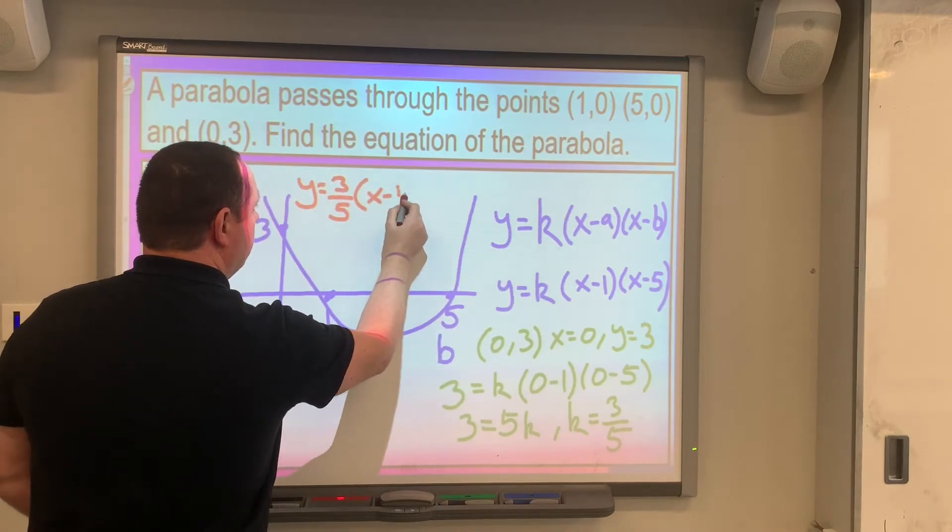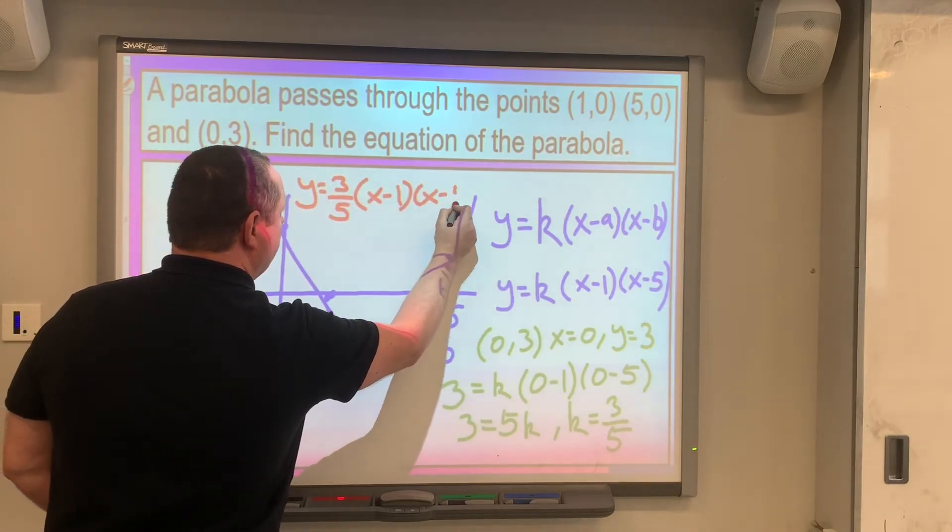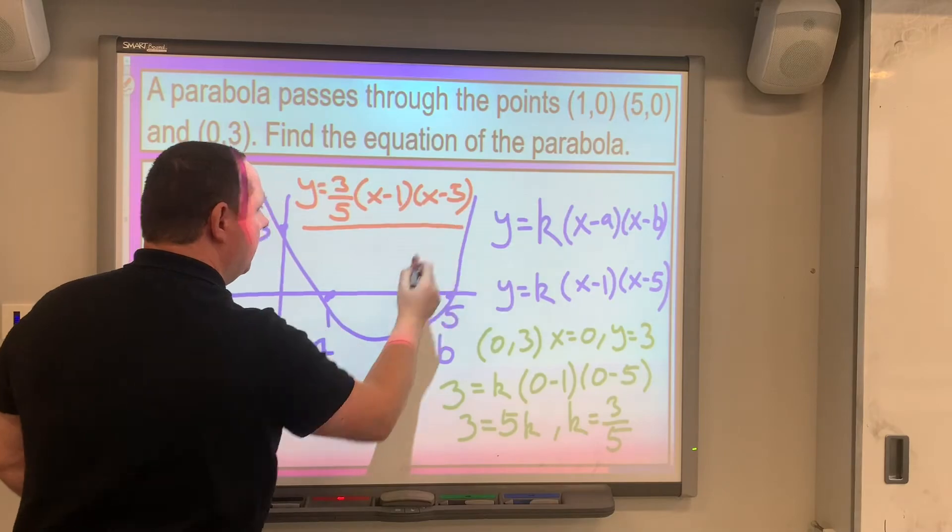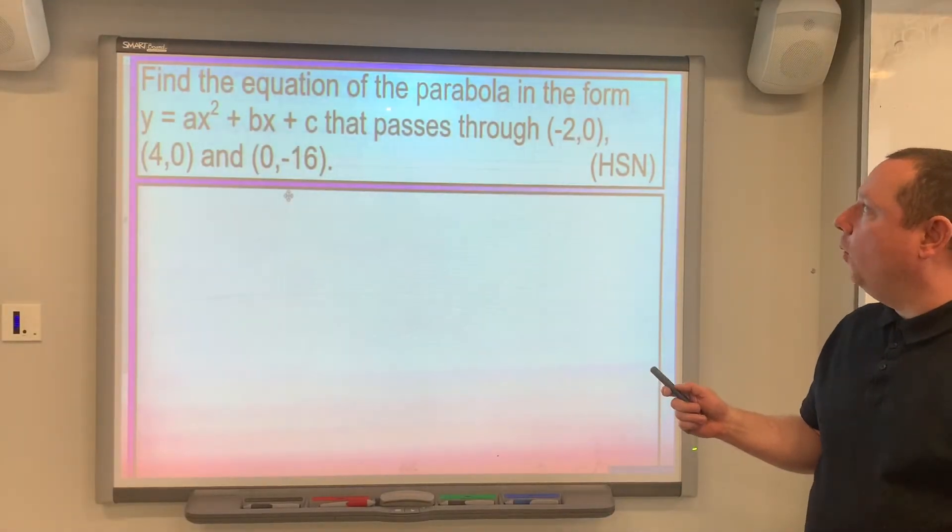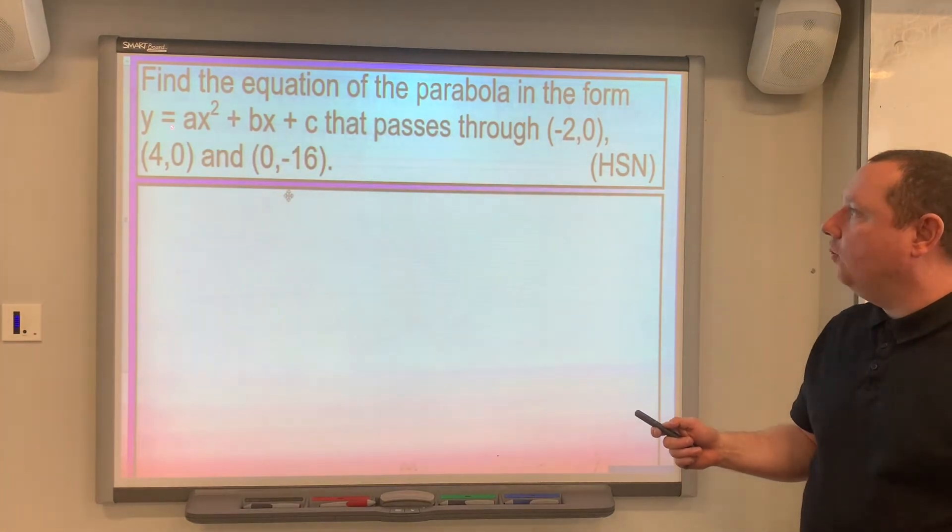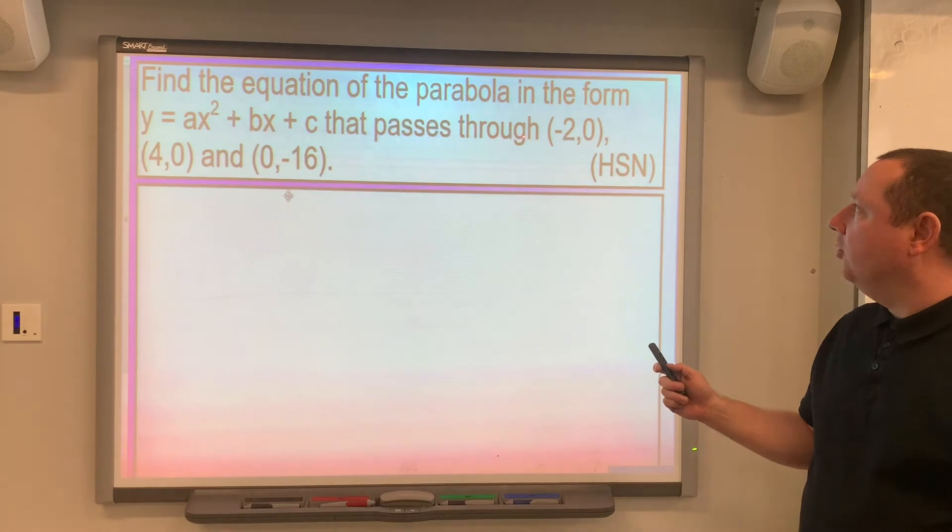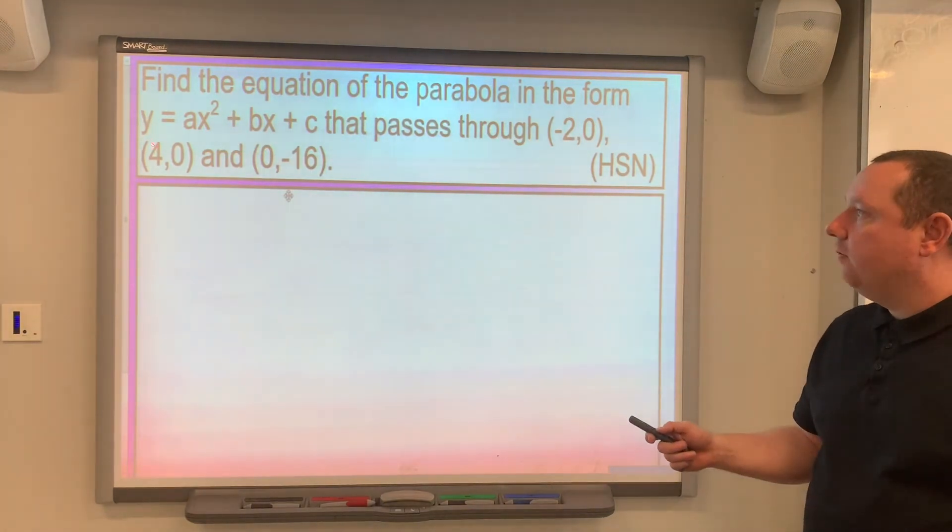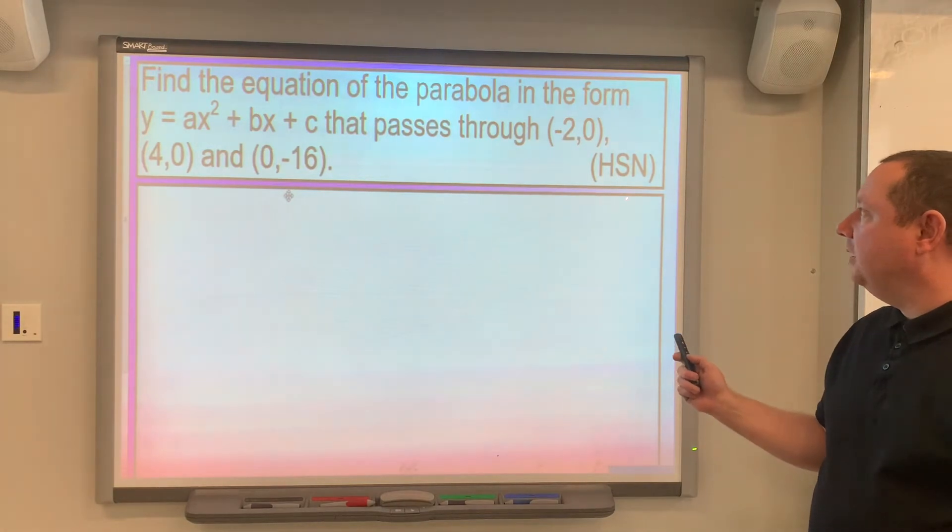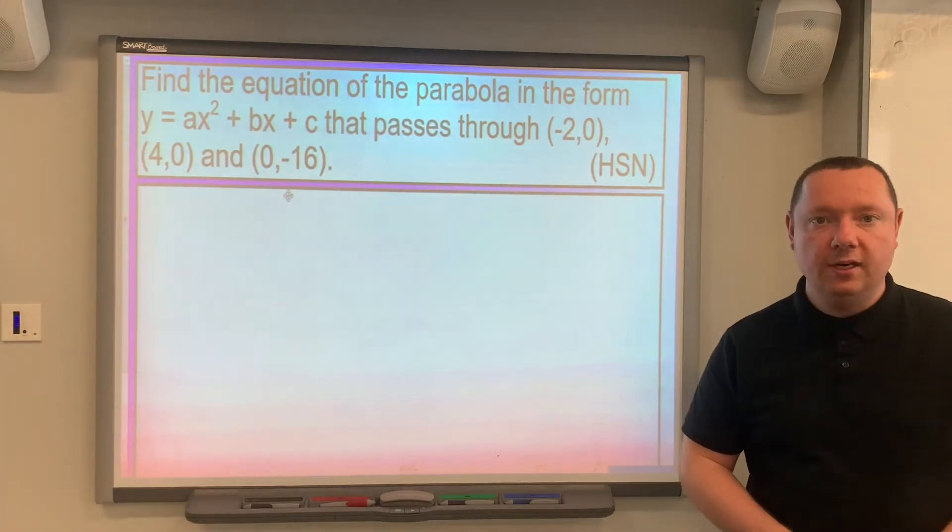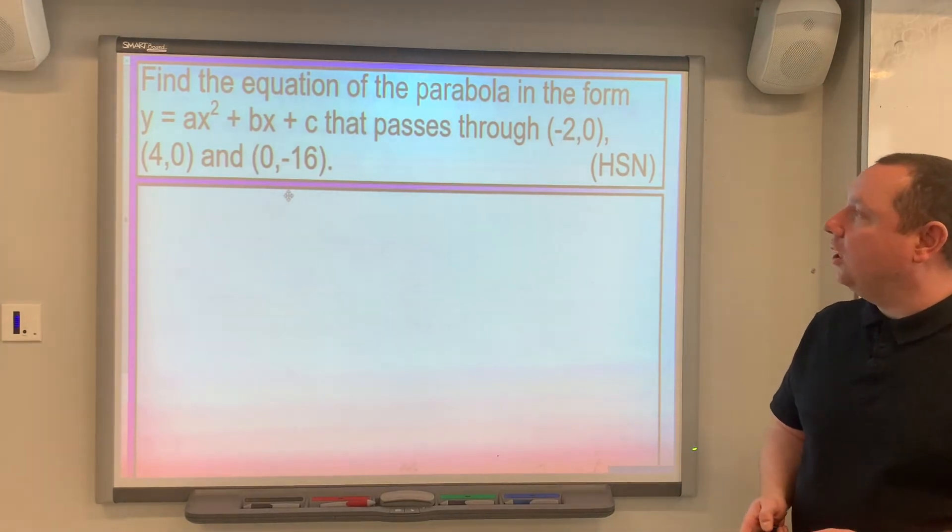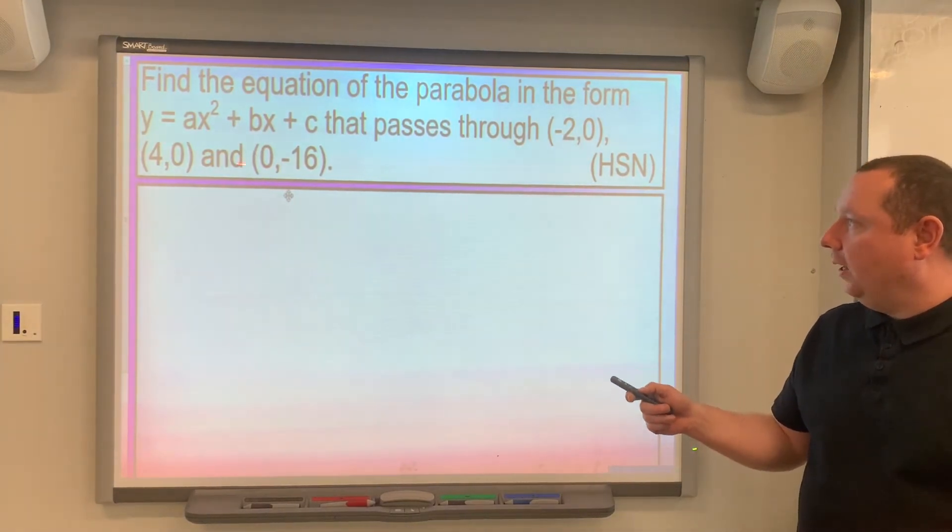Example two: Find the equation of the parabola in the form y equals ax squared plus bx plus c that passes through (-2,0), (4,0), and (0,-16). If you're using the HSN higher notes this comes from that. We'll start as per usual by drawing a sketch.